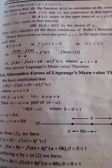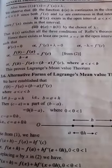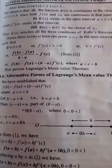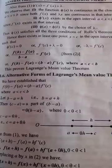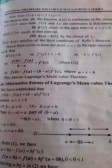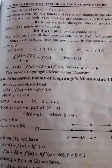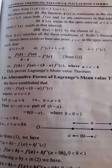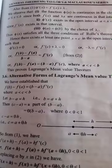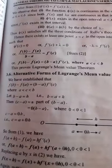So there exists a point c, x equal to c in the open interval a < c < b — that means c lies between a and b — such that φ'(c) is equal to 0. That means f'(c) plus λ equals 0, so minus λ equals f'(c).